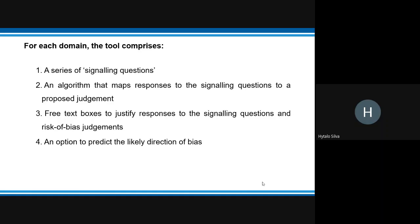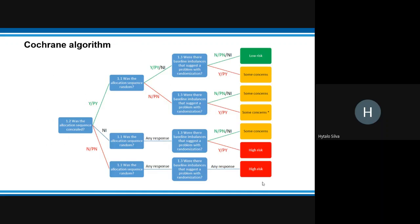For each domain, the tool comprises: a series of signaling questions, an algorithm that maps responses to the signaling questions through a proposed judgment, a free text box to justify the response to the signaling question and risk of bias judgment, and a section to predict the likely direction of bias. This is an example of the ROP2 algorithm.